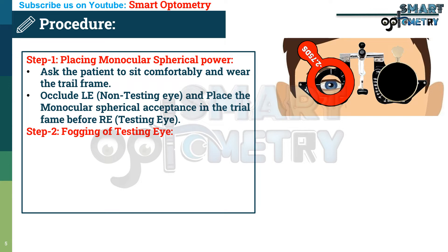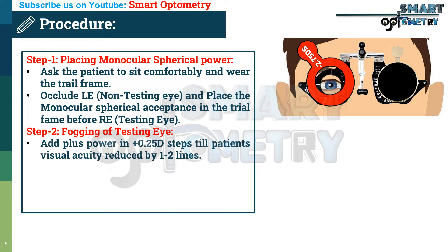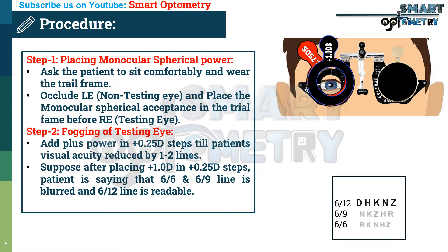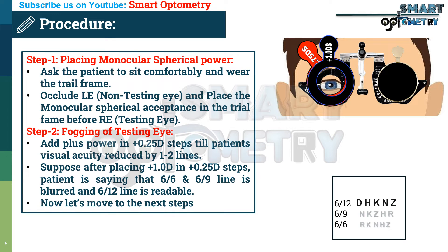Step 2: Fogging the testing eye. Add plus power in 0.25 diopter steps until the patient's visual acuity is reduced by 1 to 2 lines. For example, after placing plus 1 diopter in 0.25 diopter steps, the patient reports that the 6/6 and 6/9 lines are blurred but the 6/12 line is readable.